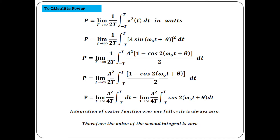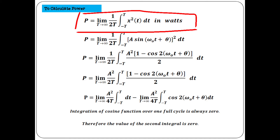So A²/2 × (∞ − (−∞)) gives energy = infinity. To calculate power, write the formula: P = limit as T→∞ of (1/2T) integral from −T to T of x²(t) dt. Substitute A·sin(ω₀t + θ) whole square. A² × sin²θ = (1 − cos 2θ)/2. Split into two integrals; the cosine integral over a full cycle is 0, so the second integral is 0.